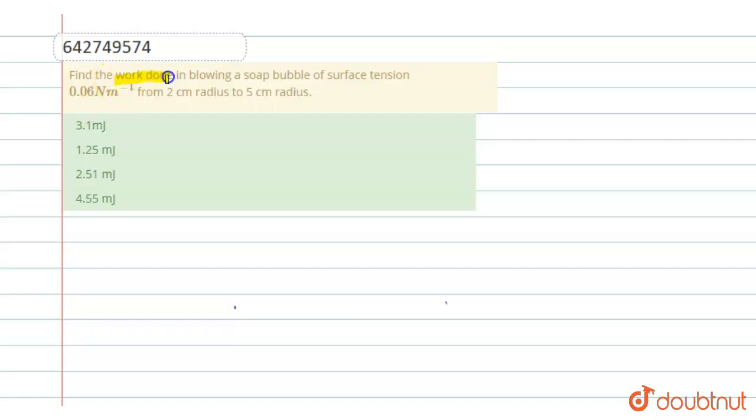Find the work done in blowing a soap bubble of surface tension 0.06 newton per meter from 2 centimeter radius to 5 centimeter radius.